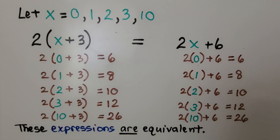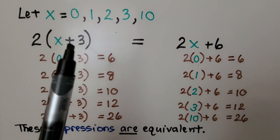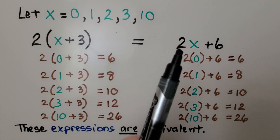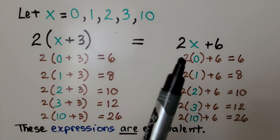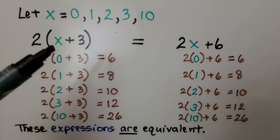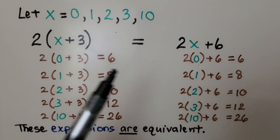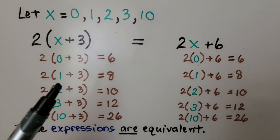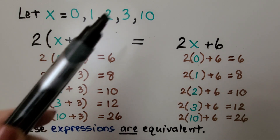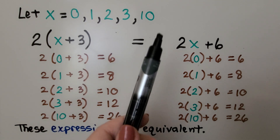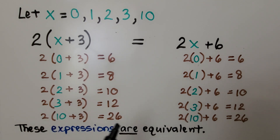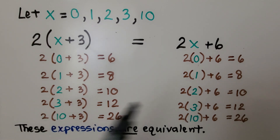Here we have two expressions: 2 times (x plus 3) and 2x plus 6. These are equivalent expressions because if we put 0 for x, they both equal 6. If we put 1 for x, they both equal 8. If we put 2, they both equal 10. If we put 3, they both equal 12. And if we put 10, they both equal 26. For other values they'll also be equal, so these expressions are equivalent.